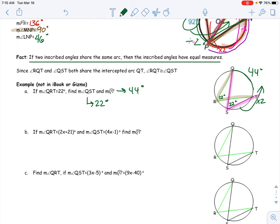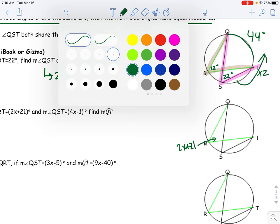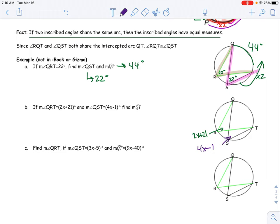Alright, now same problem but different. Angle QRT is 2x plus 21, so that's 2x plus 21. Angle QST is 4x minus 1. We've got to find the measure of QT, so let's just do this.